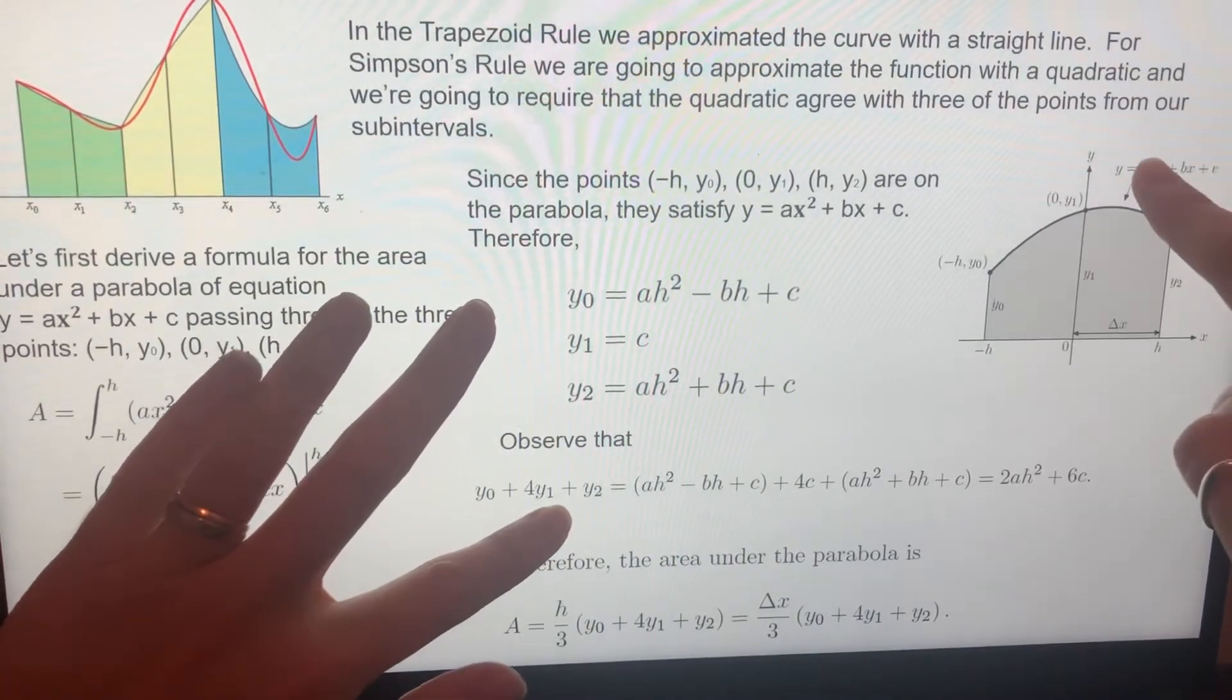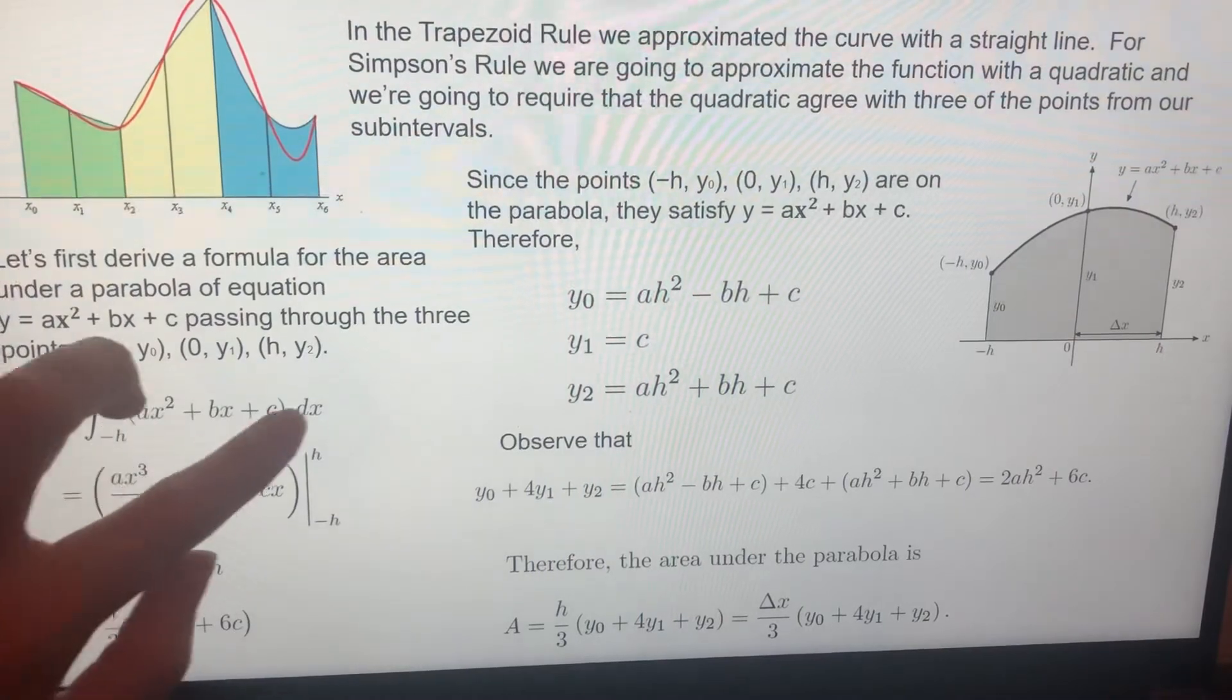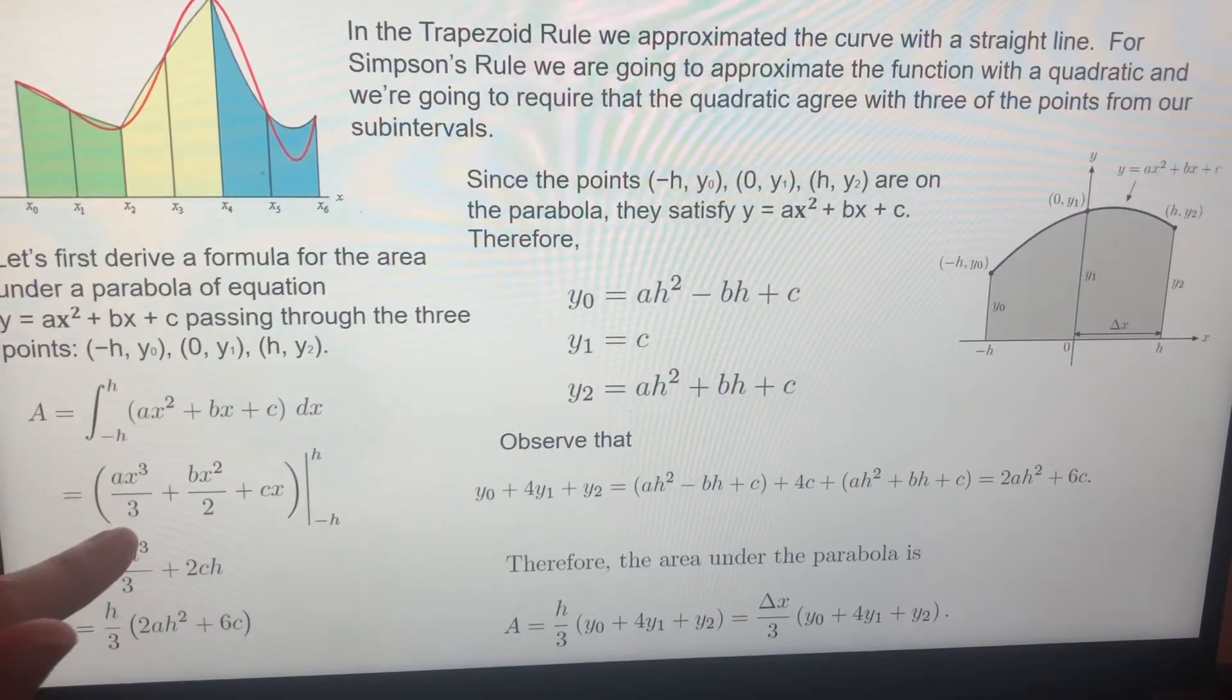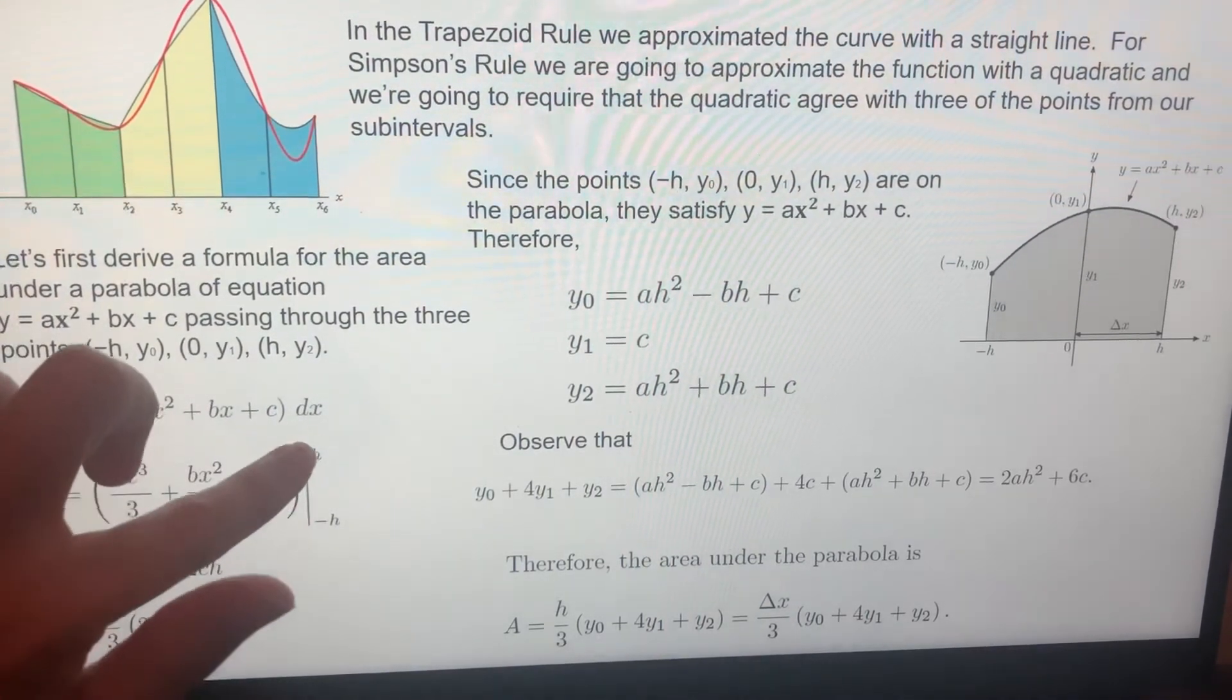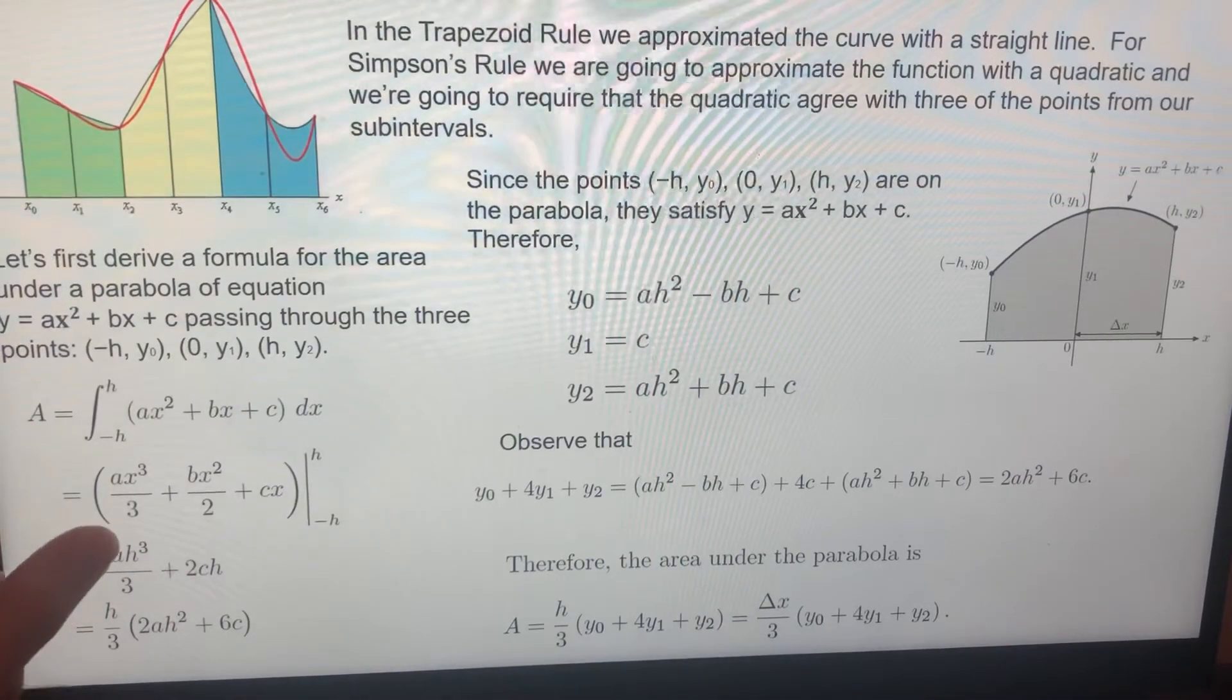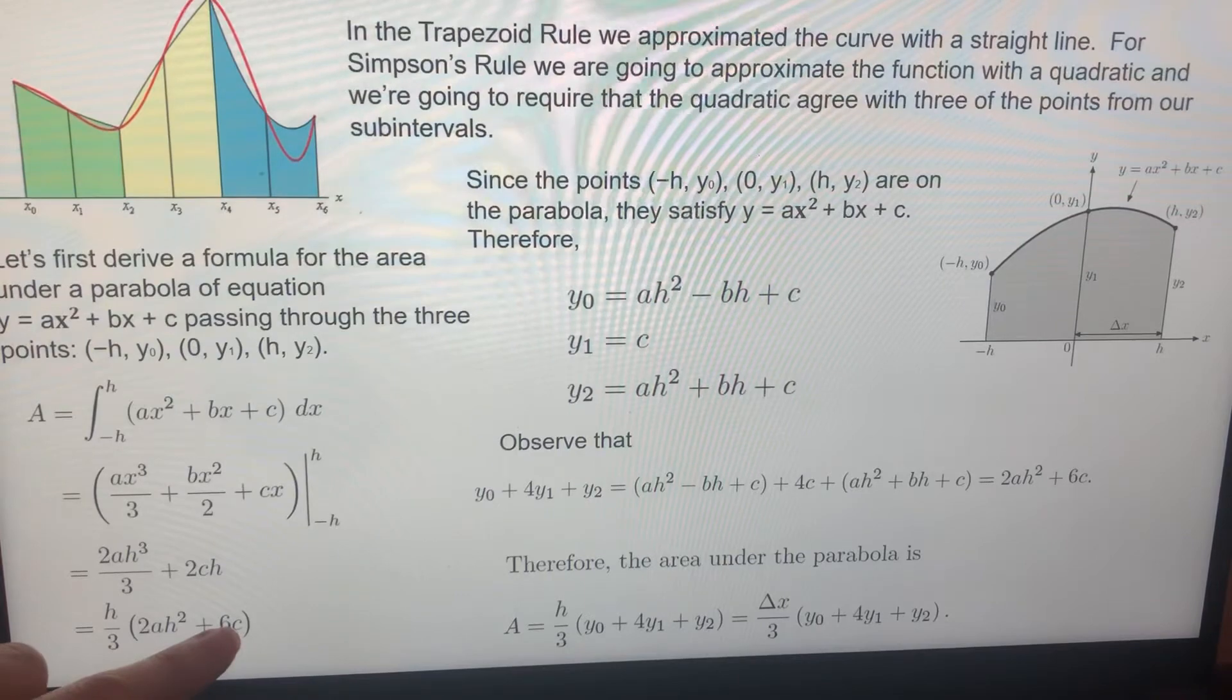Now, let's take the integral of the same function from minus h to h. The integral of a quadratic function from minus h to h, since this is just a polynomial function, a x cube over three, b x square over two, c x from minus h to h. Plugged in h, minus plugged in minus h, this is what you will get. And if you factor out h over three, what do you get? Two a h square plus six c.